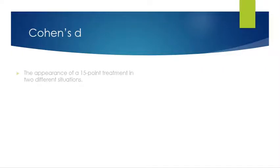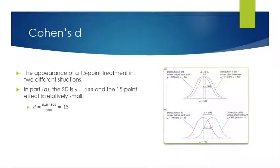Let's look at an example of Cohen's d — the appearance of a 15-point treatment in two different situations. In Part A, the distribution of SAT scores before treatment has a mean of 500 with a standard deviation of 100, and after treatment the mean is 515 with a standard deviation of 100. Calculating Cohen's d: 515 minus 500 over 100 gives 0.15, which is pretty small.